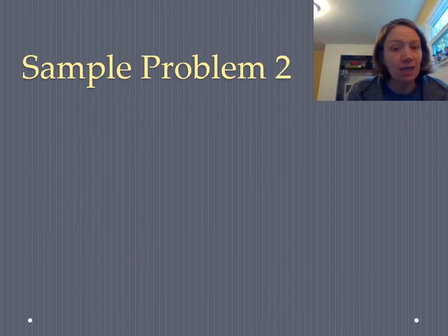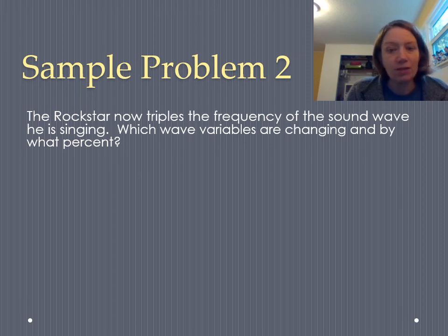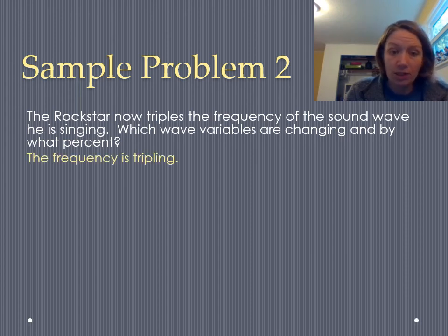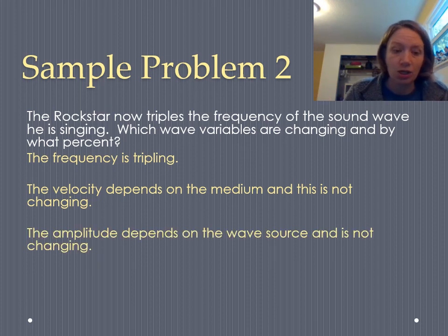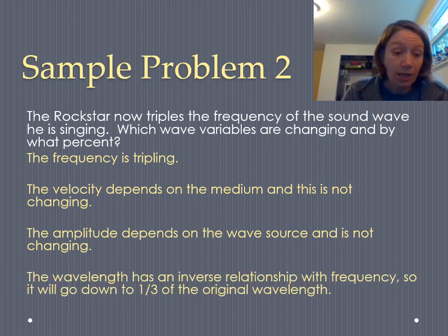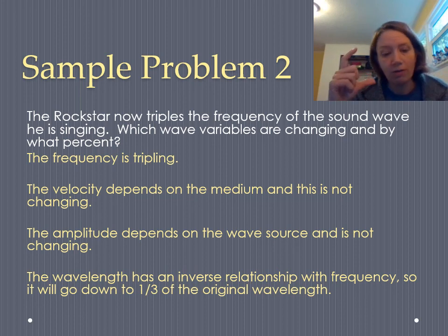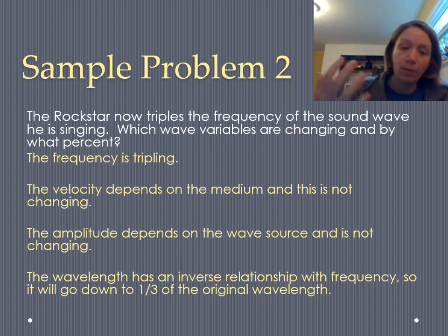All right, let's run through one more sample problem. This is a conceptual sample problem. The rock star now triples the frequency of the sound wave that they're singing. Which wave variables are going to be changing and by what percent? So we know that the frequency is tripling. That's given. And the velocity depends on the medium. There is no mention of the fact that this sound wave is going into a different medium. It's probably in air the entire time. And that means that the velocity of the sound wave is actually not changing. Another thing that's not changing is the amplitude. It doesn't say anything about the amplitude. And amplitude doesn't depend on frequency. It depends on the wave source. So that's not changing either. The last wave variable is wavelength. And wavelength has an inverse relationship with frequency. So when the frequency triples, the wavelength goes down. One variable goes up, the other one goes down, and it's going to go down to one third of the original wavelength to balance out the fact that it's tripling.